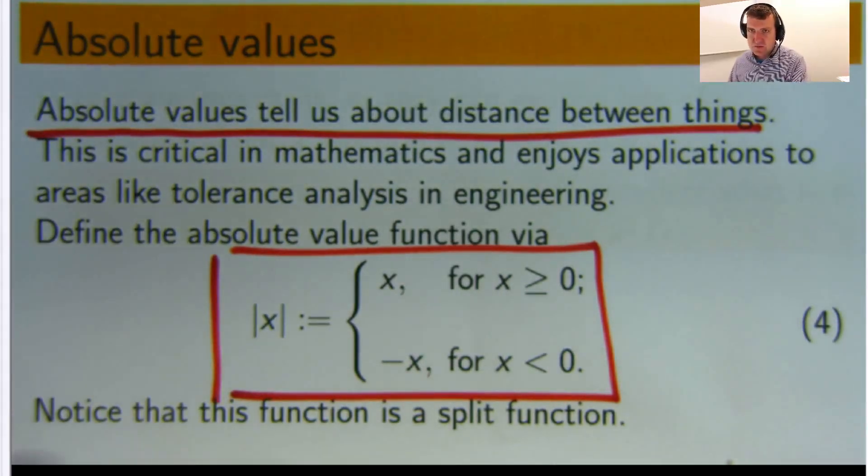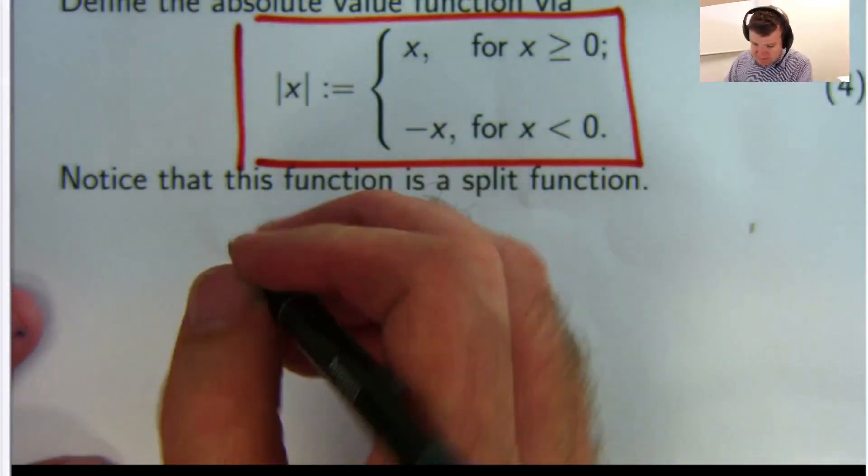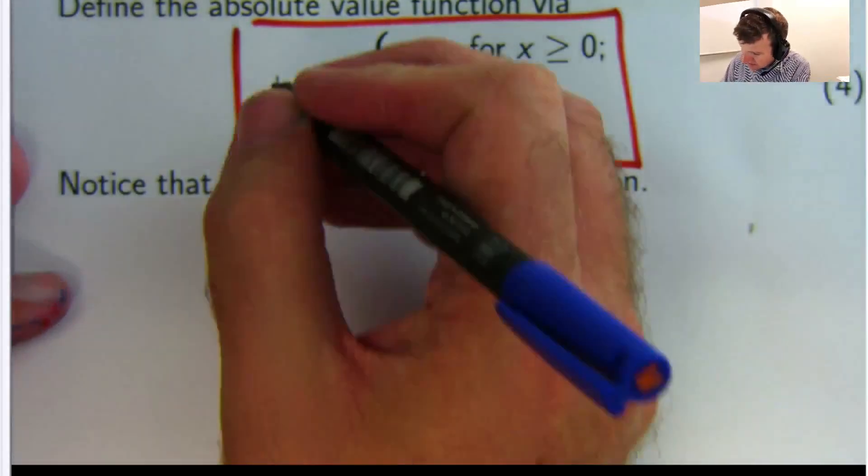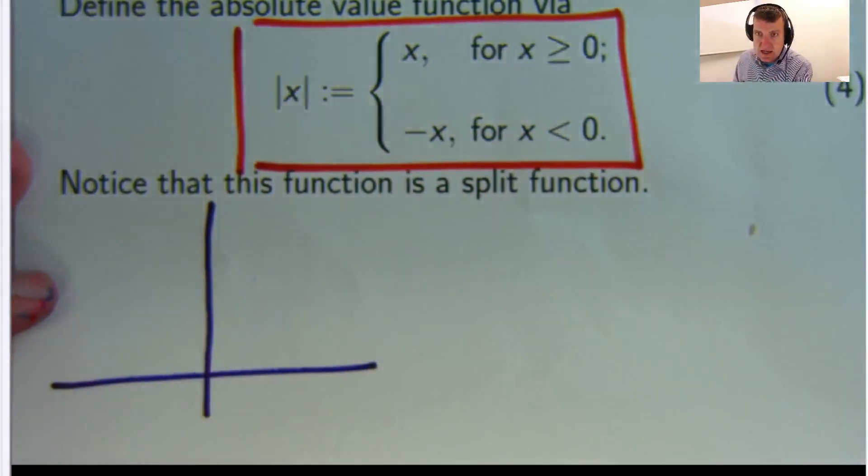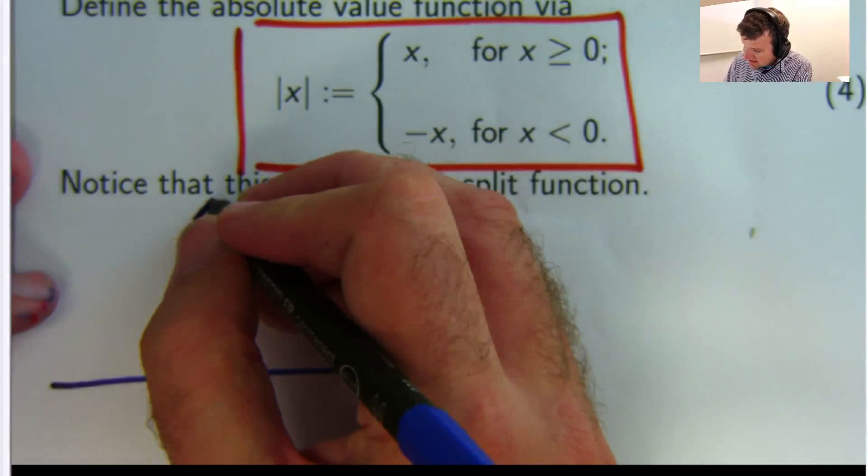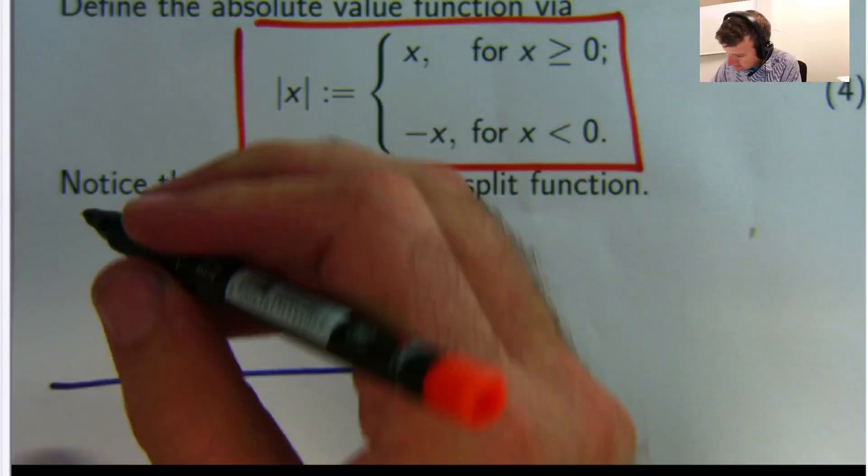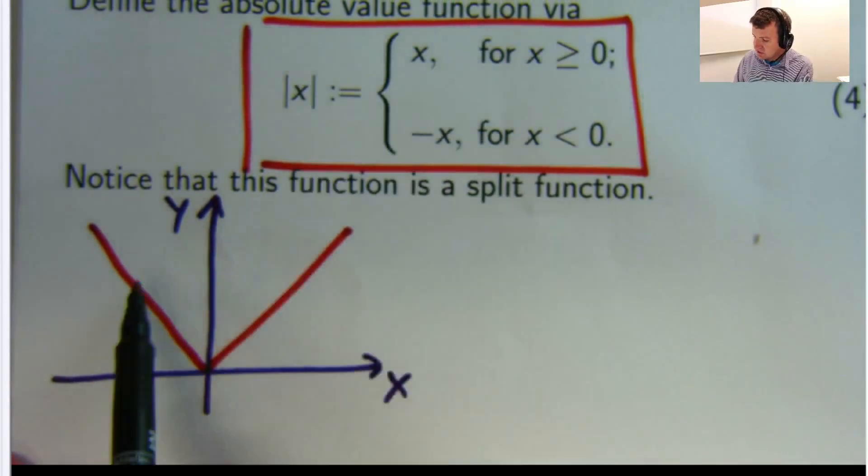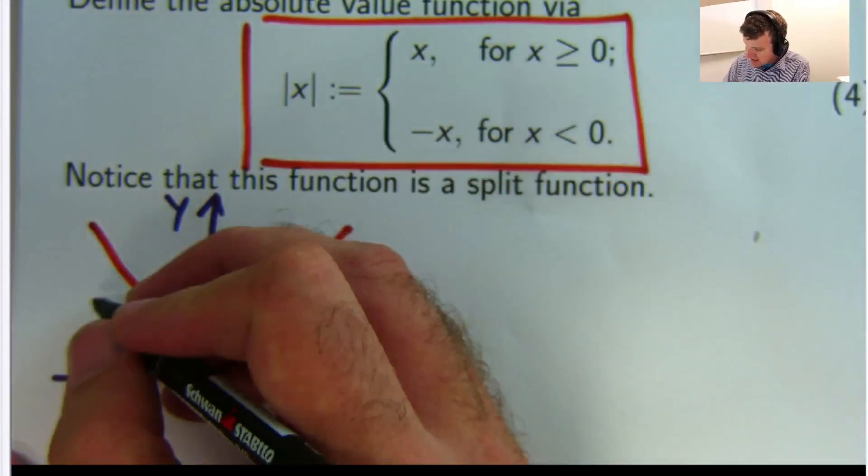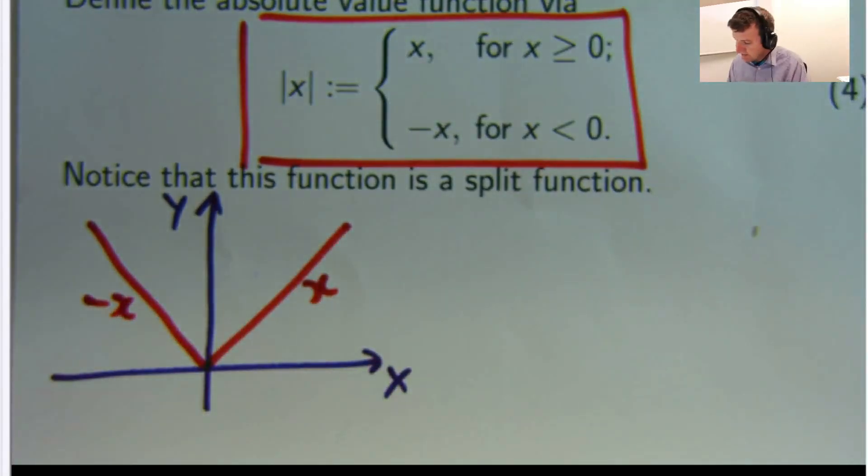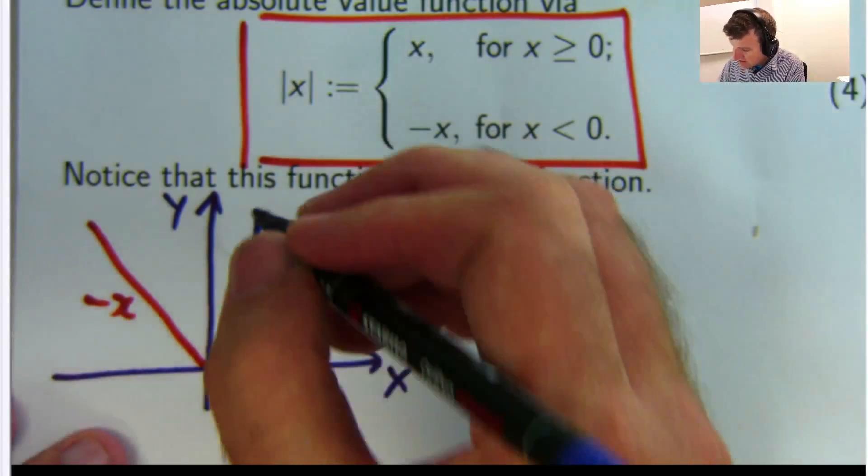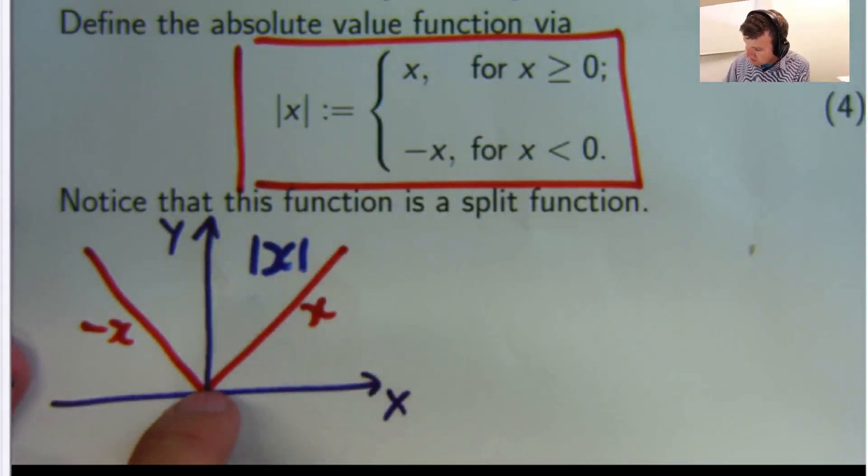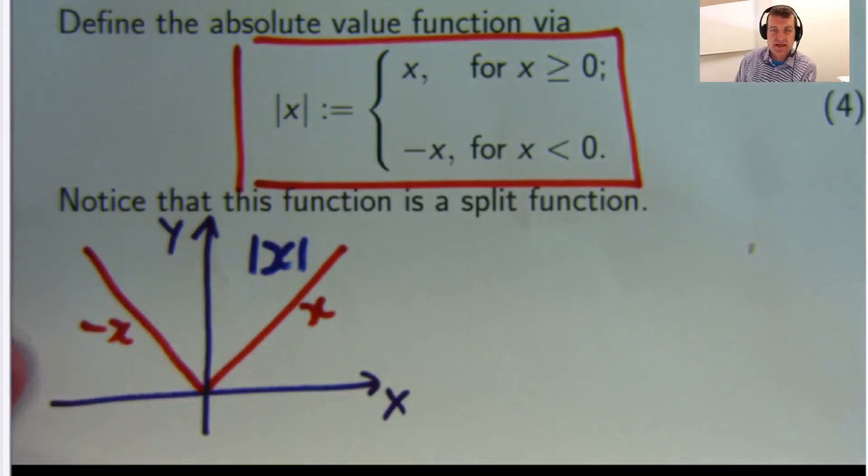This is probably the best way I can explain it. In mathematics, absolute values tell us about distance between things. This is very important and enjoys applications to areas like tolerance analysis in engineering. Now if I draw the graph of the absolute value function of x, it looks like this. Here you can think of this as the x part and here is the negative x part. So on this side it's just the regular x function, on this side it's the negative of the input, the negative of x.